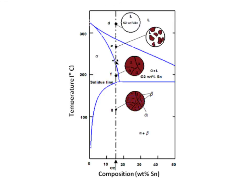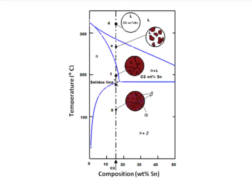When we pass the solidus line, we get a pure alpha phase — as before, we are in the one-phase region. But now the alpha phase has dissolved up to 15% tin in a lead matrix. When we pass the solubility line further down, we enter the two-phase region of alpha plus beta, and we also precipitate beta phase. Using the lever rule, the distance from our composition to the pure beta phase is always relatively short compared to the total, meaning the amount of beta phase precipitated will be relatively small.